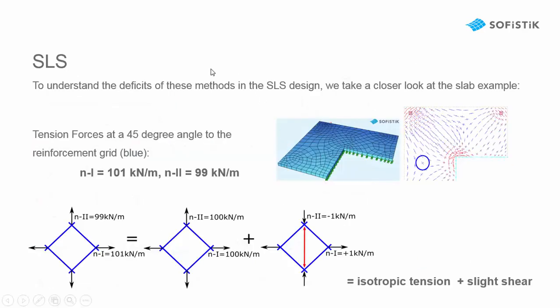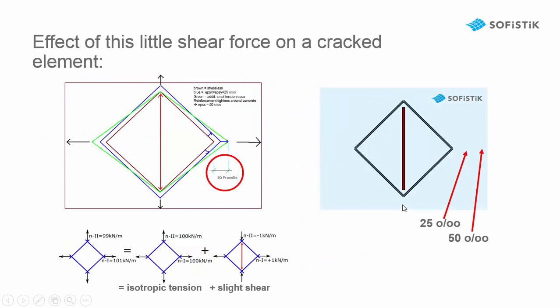But on the SLS level the results are not okay. To understand this we again show our little slab with this element and we assume on the bottom side a normal force in this direction of 101 and 99 in the other direction. We can divide this into 100-100 isotropic tension and a slight shear. If we take the ultimate limit design in the first step 100-100 the two reinforcements can get a maximum strain of 25 per mil isotropic. And if we add the shear this reinforcement must first touch the concrete and this gives here a horizontal strain of 50 per mil.